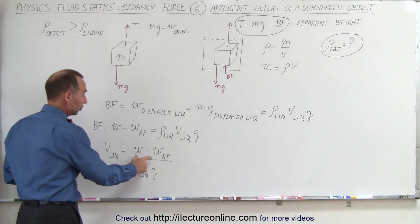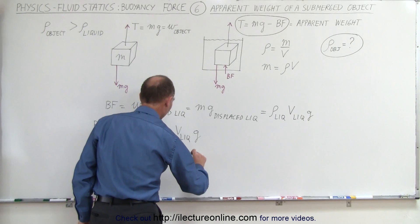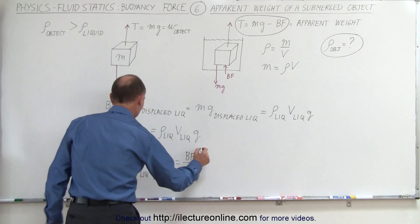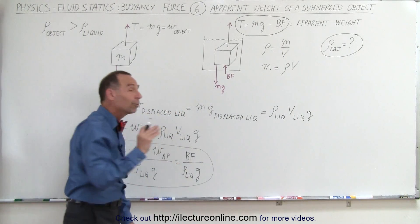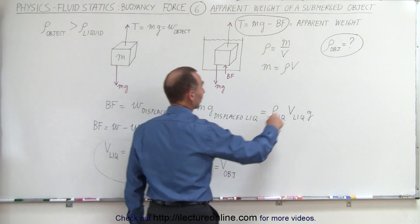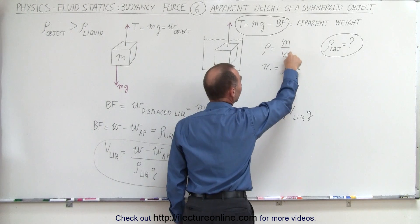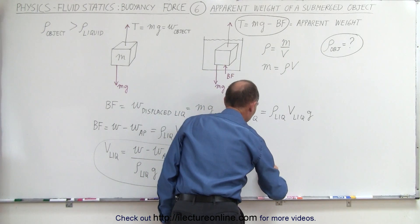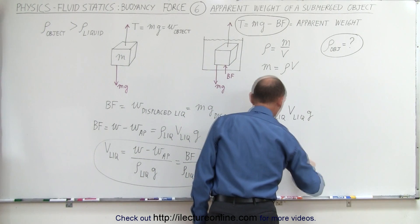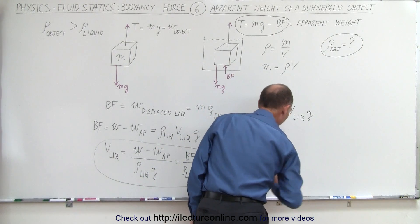This can be readily measured. We measure the difference, which equals the buoyancy force, divided by the density of the liquid times g, and this gives us the volume of the liquid — which is equal to the volume of the object. Going back to finding the density of the object, and knowing that density equals mass divided by volume, the density of the object equals the mass of the object divided by the volume of the displaced liquid, which is equal to the volume of the object.